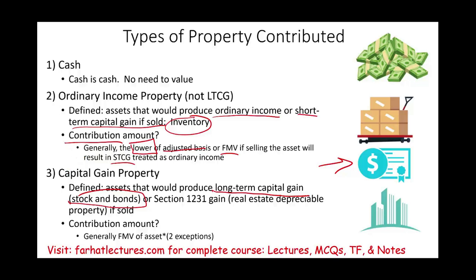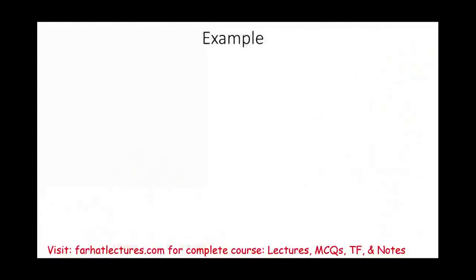If you held the stocks or bonds long enough, they fall into the capital gain property category — the third group — or Section 1231 gain property, which includes real estate and depreciable property. For capital gain property, how much can you deduct? Generally, you are allowed the fair market value — assuming fair market value is higher than basis — unless one of two exceptions applies, which we will now discuss.